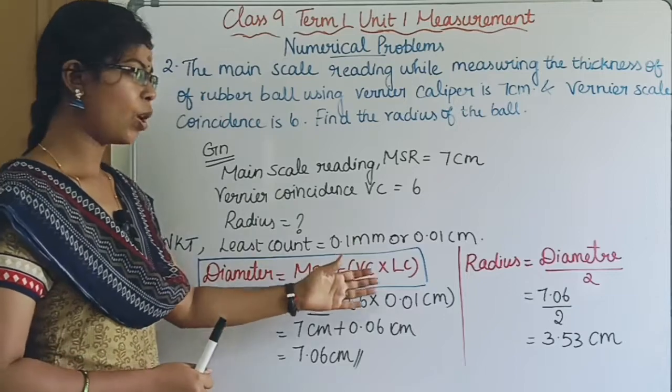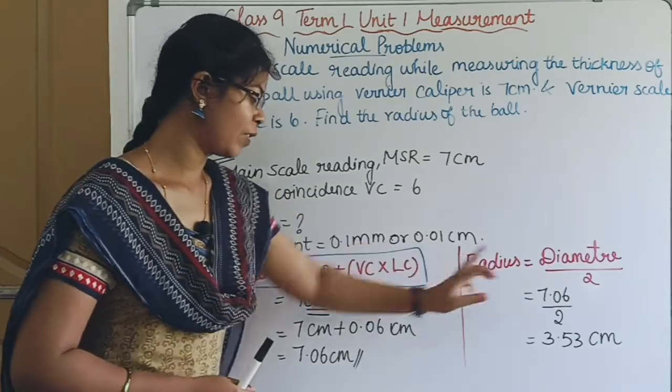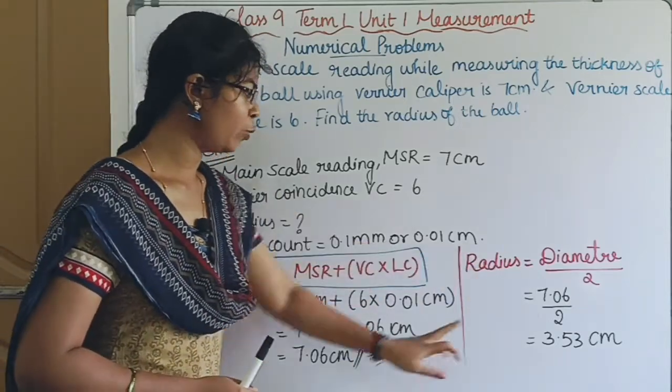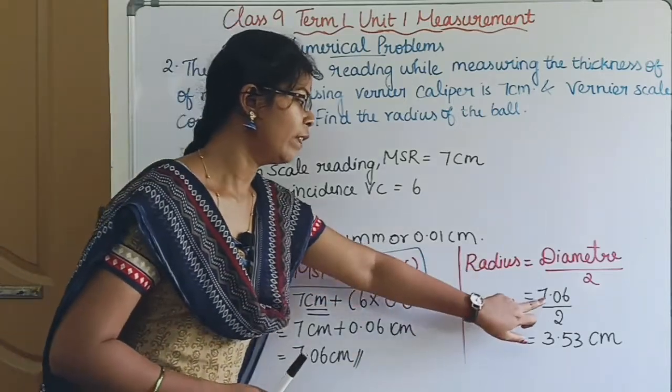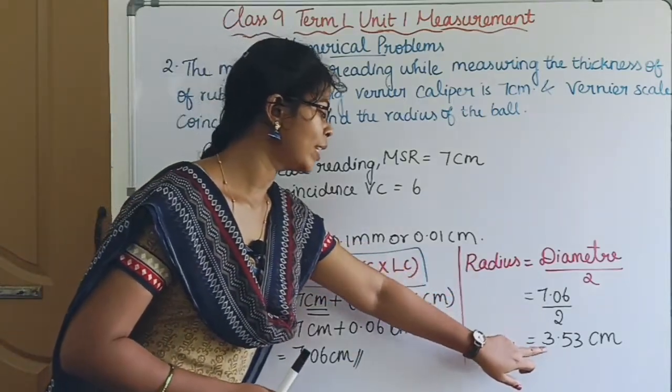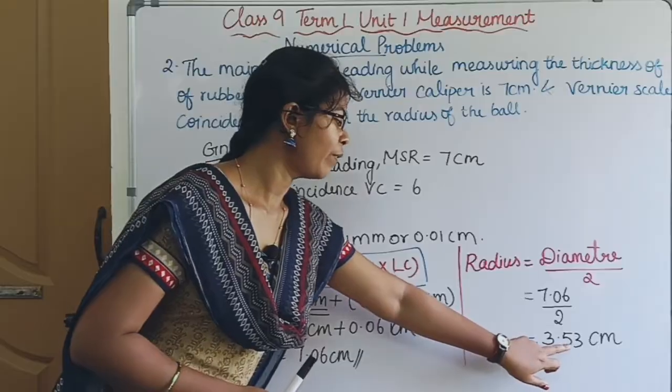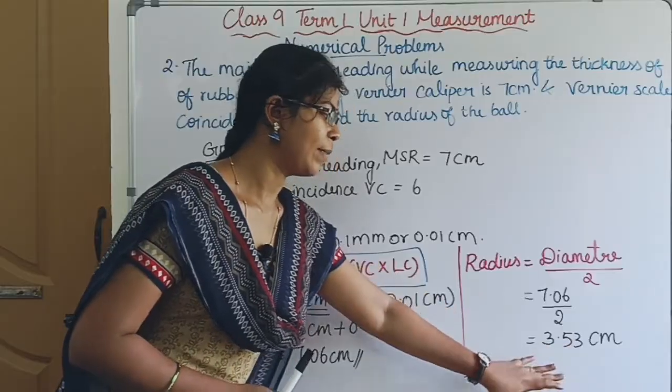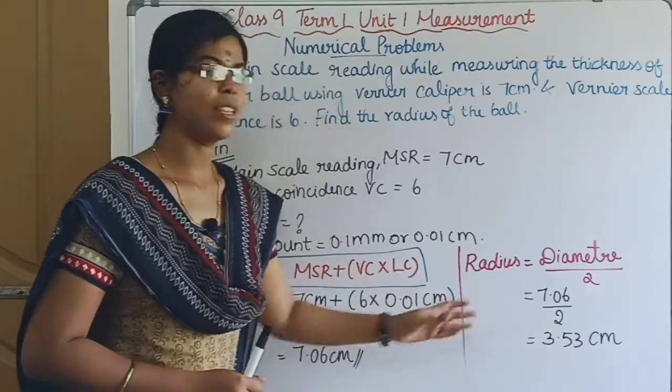Now for the radius, we divide the diameter by 2: Radius = 7.06 / 2 = 3.53 cm. So this is the answer.